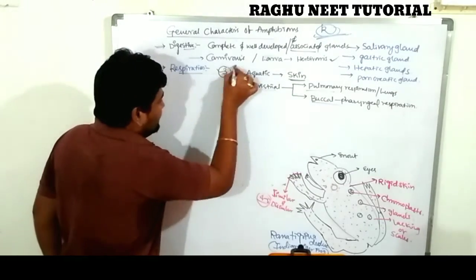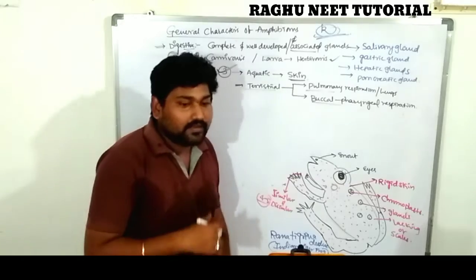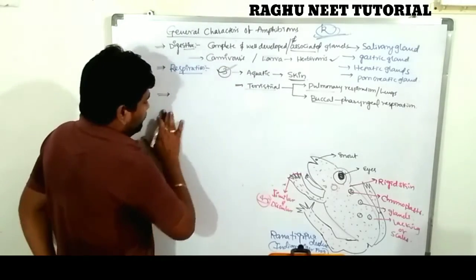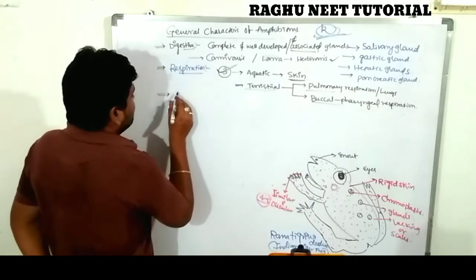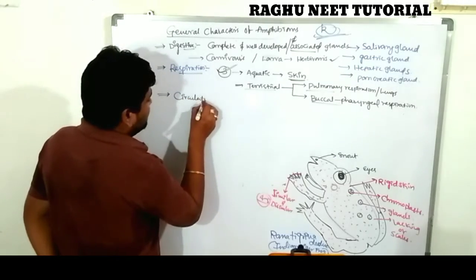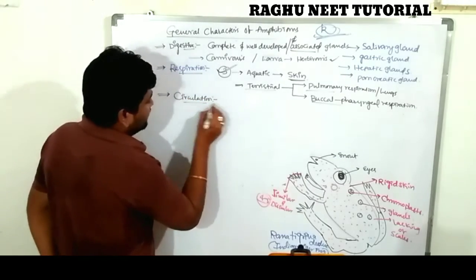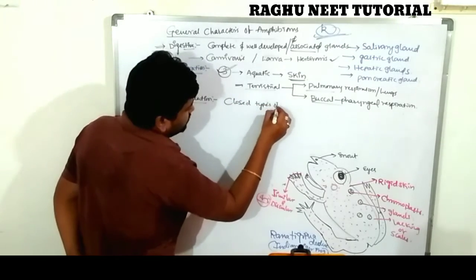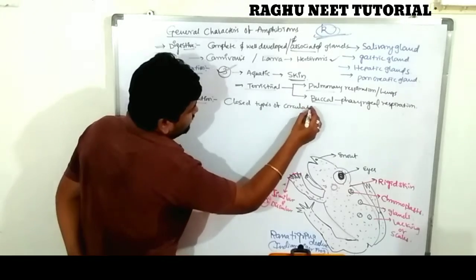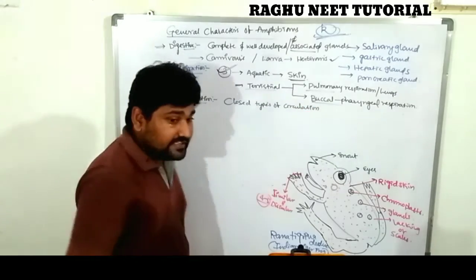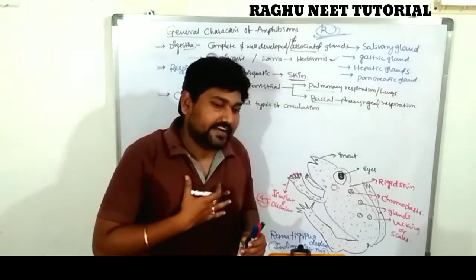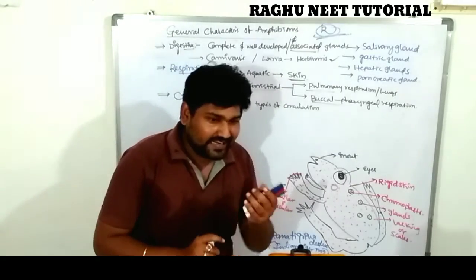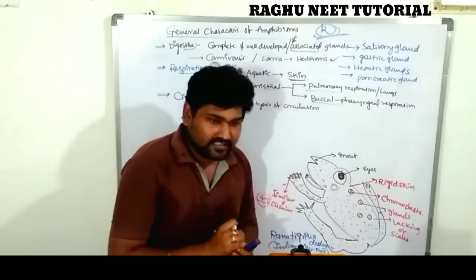There are three complete types of respiration that take place in amphibians. Regarding circulation, they show a closed type of circulation. The heart is located on the ventral side of the body.